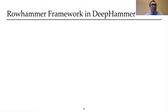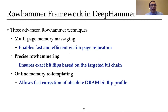Now that the bit search process has generated a chain of bits to flip, we need to tackle the system-level challenge: flipping the target bits in memory through Rowhammer. We propose three advanced Rowhammer techniques for this purpose: multi-page memory massaging that enables fast and efficient victim page relocation, precise Rowhammering that ensures exact bit-flips based on the targeted bit chain, and online memory re-templating which allows fast correction of an obsolete DRAM bit-flip profile.